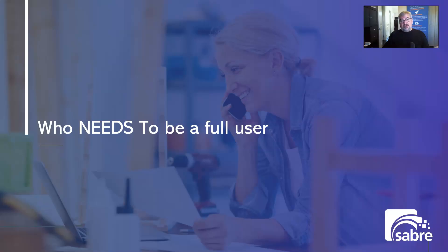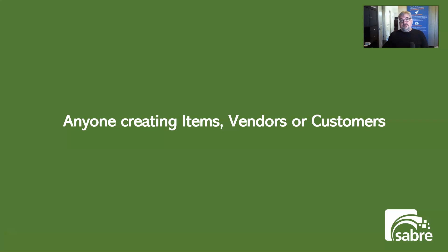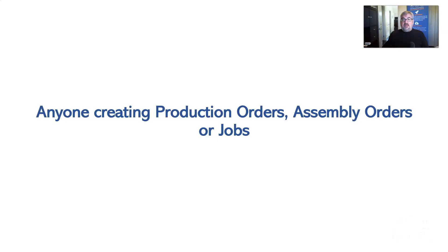The last thing I want to deal with is who needs to be a full user, because customers are always confused by that as well. Your purchasing department — people who are doing purchasing — they need to be full users. Anybody who creates items, vendors, or customers needs to be a full user. Anyone entering sales orders needs to be a full user, so that could be an inside sales person but not necessarily an outside one. The outside sales person with a team license could look up sales orders and even edit them, but couldn't create new ones. Also, team members can create quotes. Anyone creating a production order, an assembly order, or a job needs to be a full user.